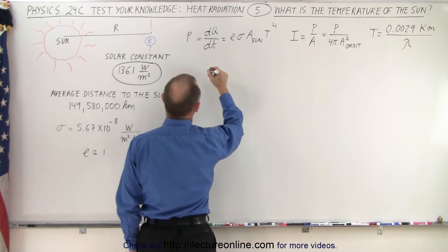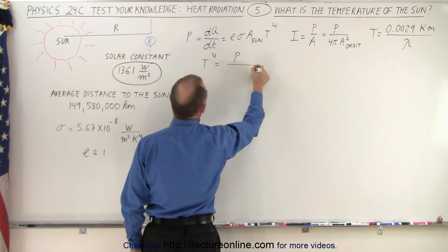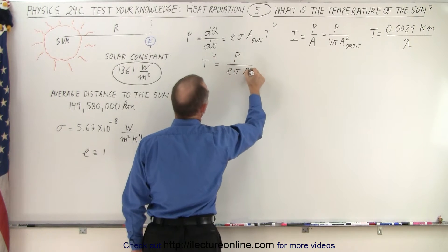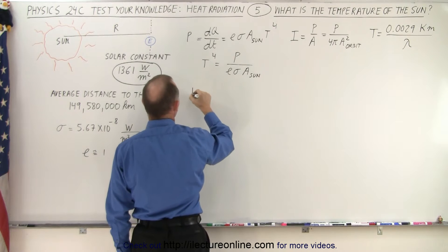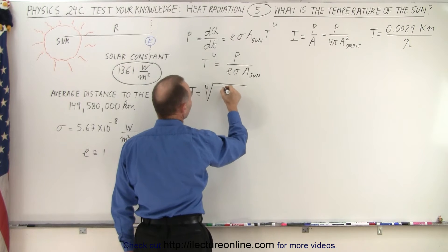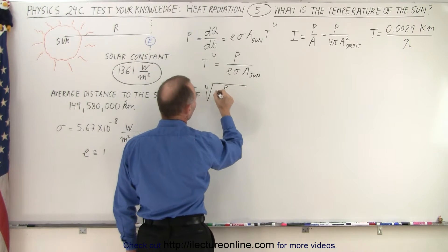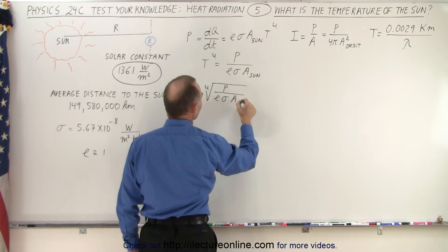Essentially, what we want here is T⁴ = P/(E·σ·A), and so that means that temperature is equal to the fourth root of the power of the sun divided by E·σ·A_sun.